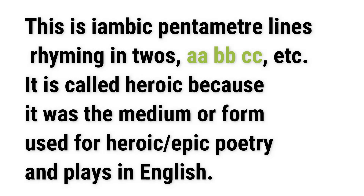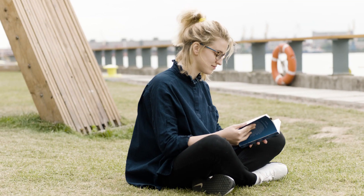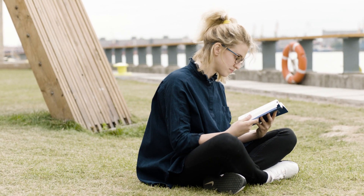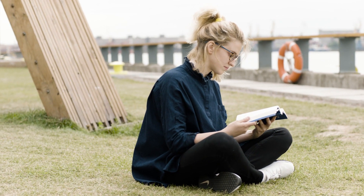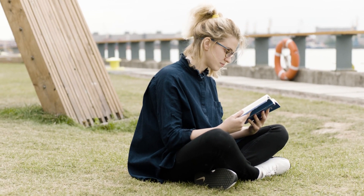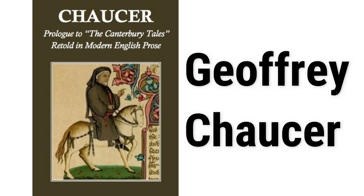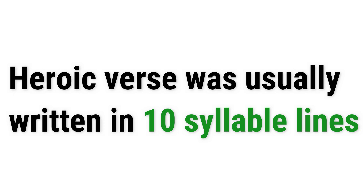Heroic verse is the iambic pentameter lines rhyming in twos: A-A, B-B, C-C. It is called heroic because it was the medium used for epic poetry and plays in English. It evolved from the 14th century when it was the medium utilized by Geoffrey Chaucer, and was usually written in ten-syllable lines.